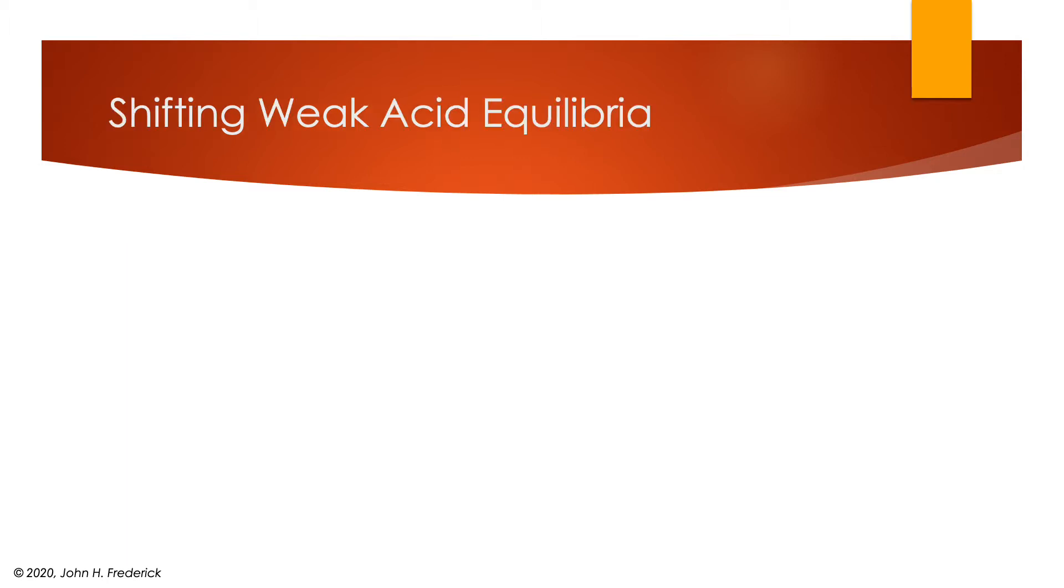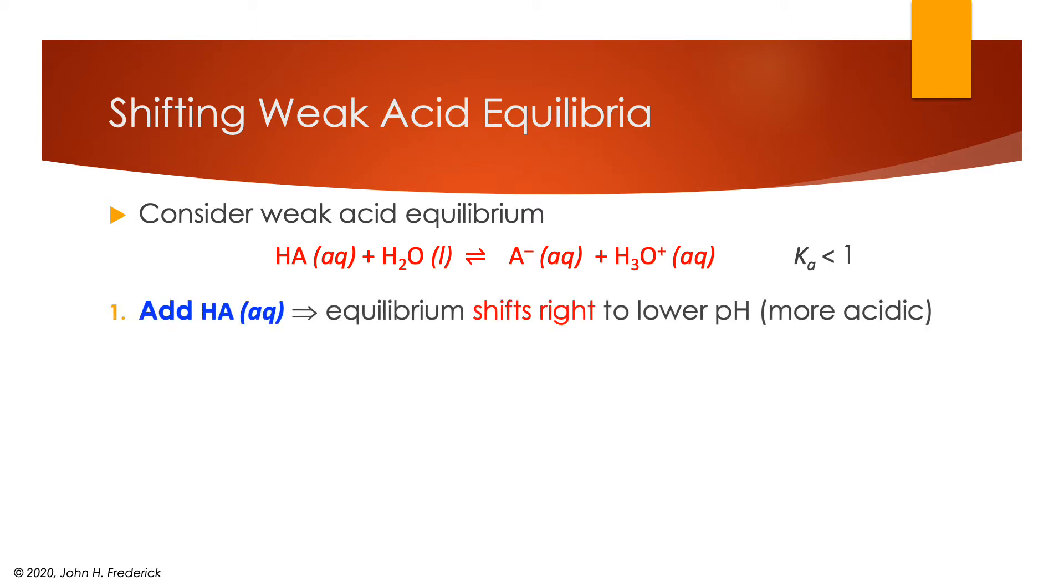So shifting weak acid equilibria, I want you to consider again the weak acid equilibrium, the same one that we've seen many times before now, where the weak acid HA is interacting with water to form its conjugate base A⁻ and hydronium ion. And again, these equilibrium constants are almost always less than 1. So how can we shift this?